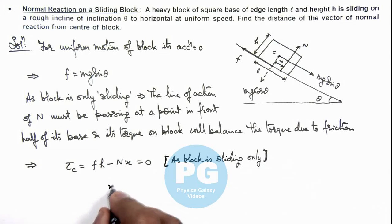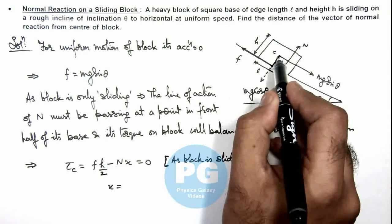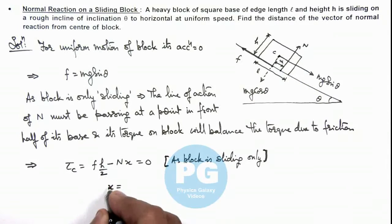So in this situation here we can write the value of x is equal to... This should be h by 2 because the torque is taken from center. So the value of x can be written as f times h upon 2N.